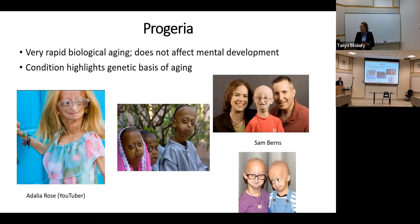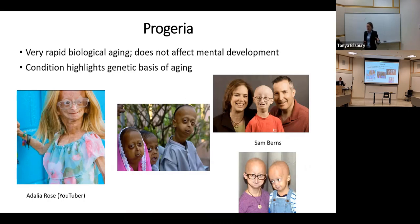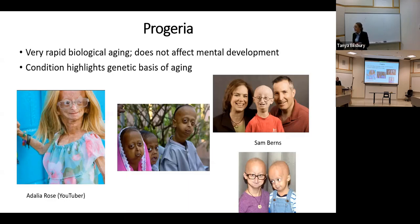Progeria is a condition that highlights the biological or genetic component of aging. People with progeria have their aging processes kick in far sooner than normal — they would seem normal at birth, but by age one or two, an aging process becomes apparent. The pictures shown are of children, but they age about 10 times faster than normal for genetic reasons, living to their teens or up to age 20. They usually pass from cardiovascular disease, and it doesn't affect mental development. Adalia Rose was a YouTuber with the condition, and Sam Burns gave a TED Talk before passing away at 17.